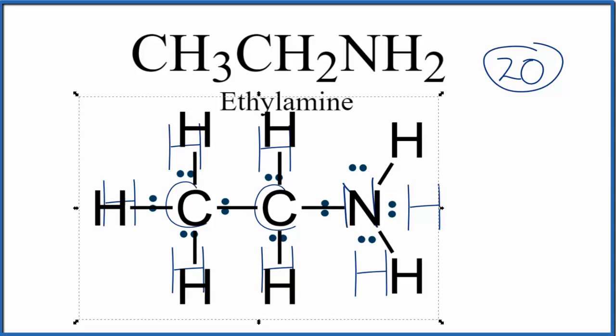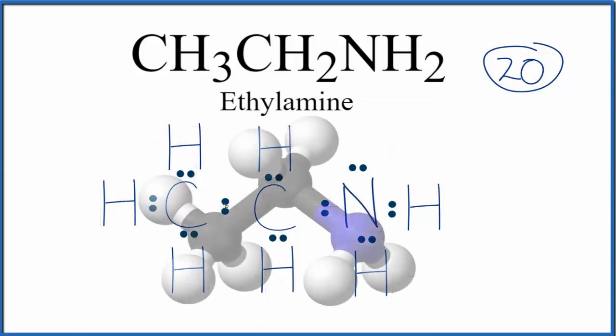You could also look at this in three dimensions. That would look like this. So the blacks are the carbons. White's hydrogen. Then we have the blue. That's the nitrogen. And again, this nitrogen right here, it would have this lone pair on top of it as well. So that's another way you could represent ethylamine.